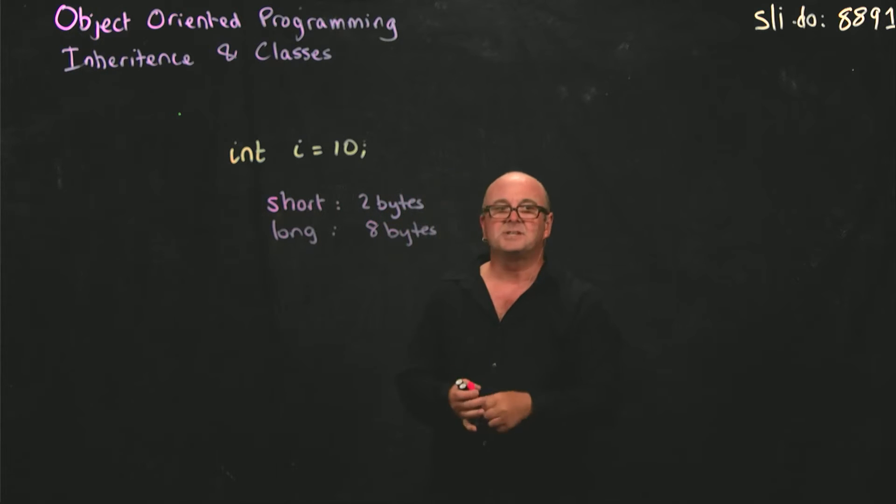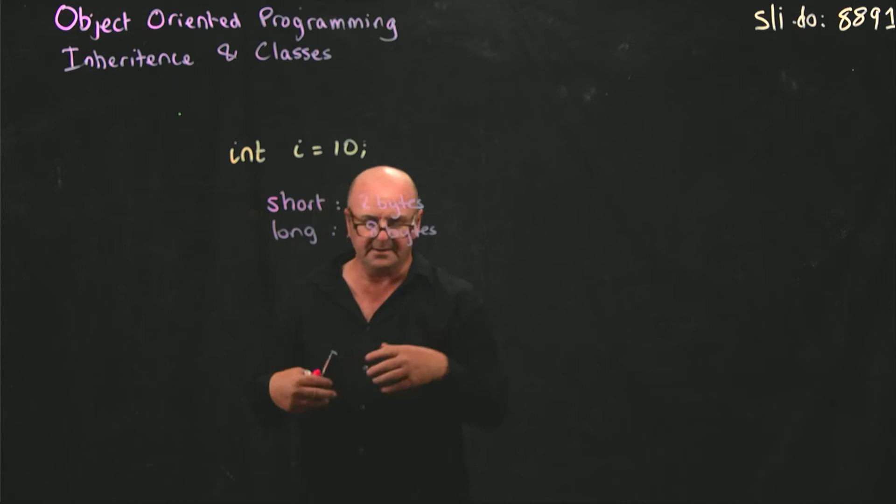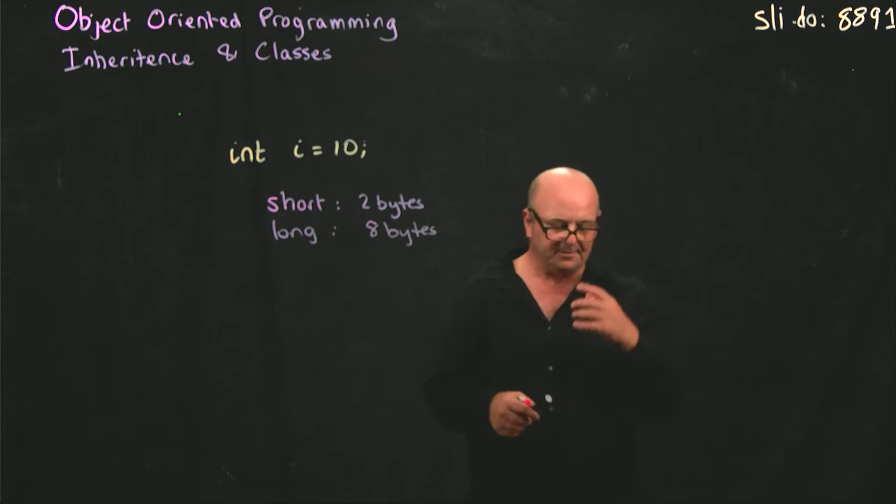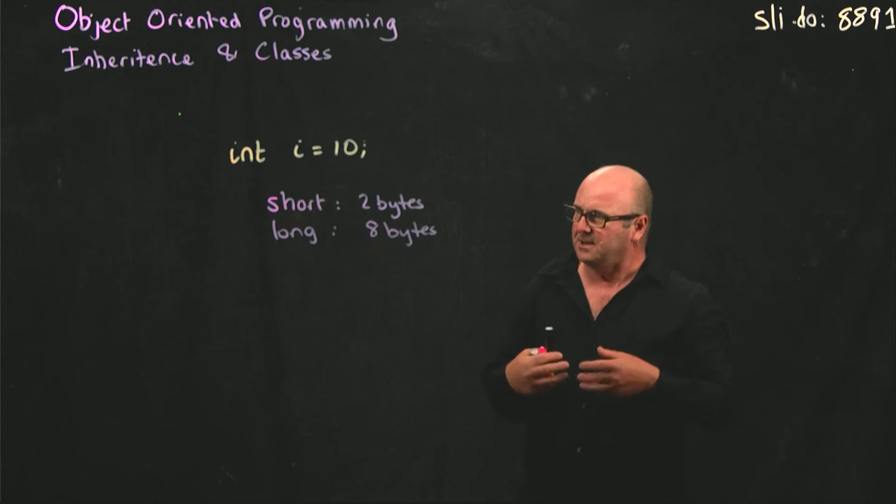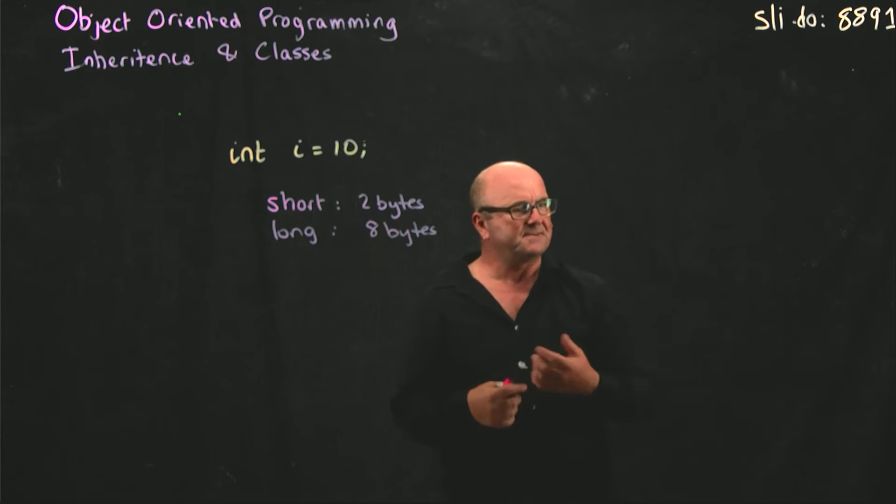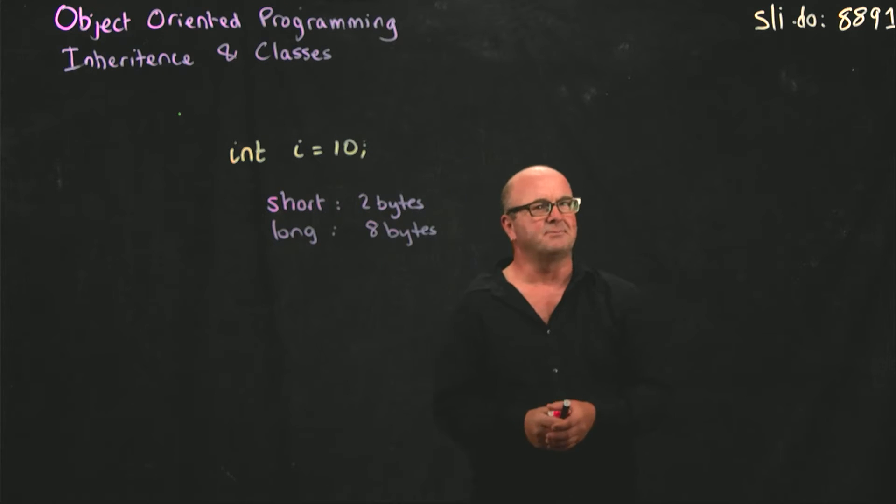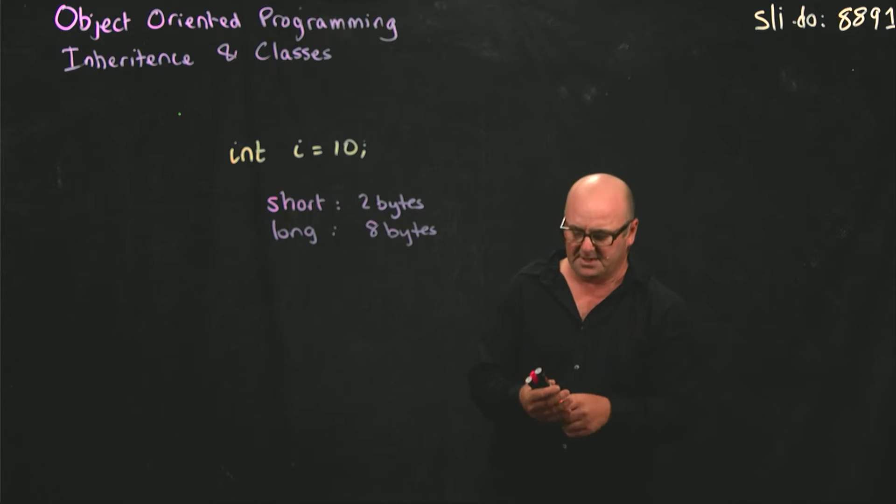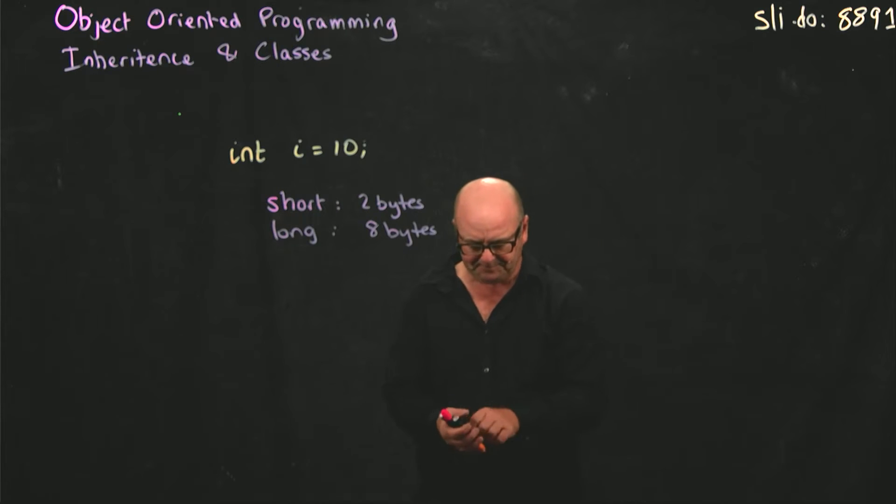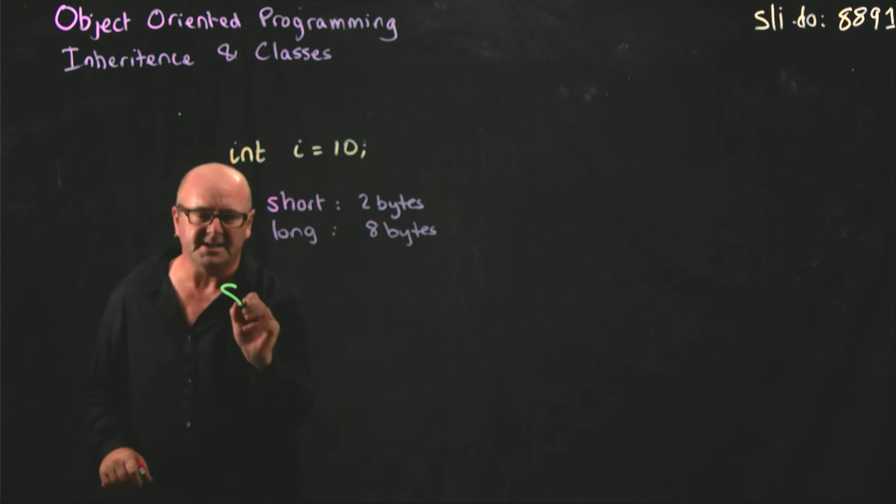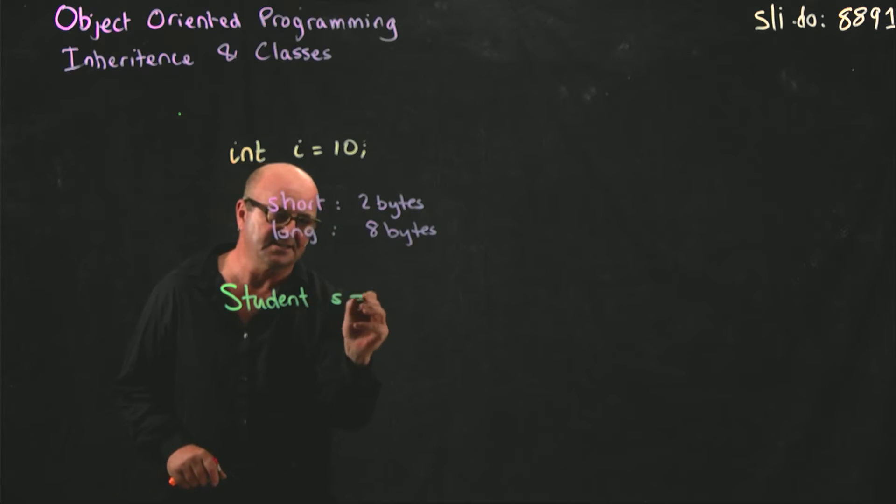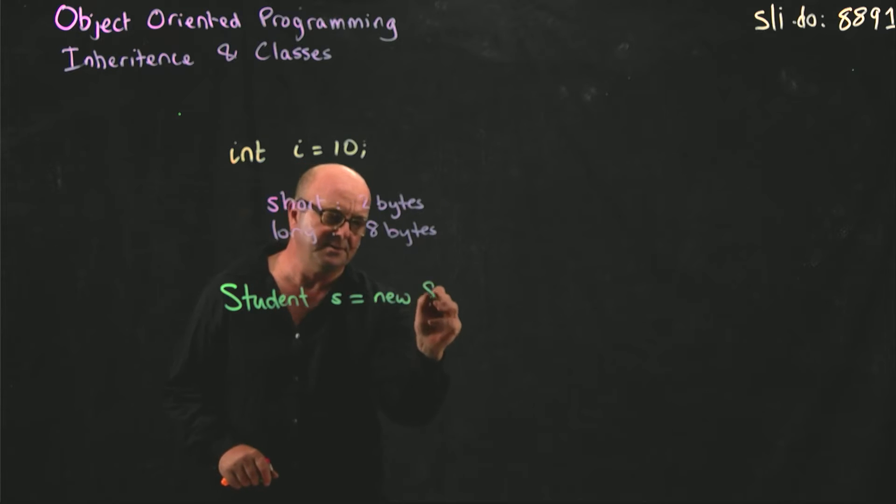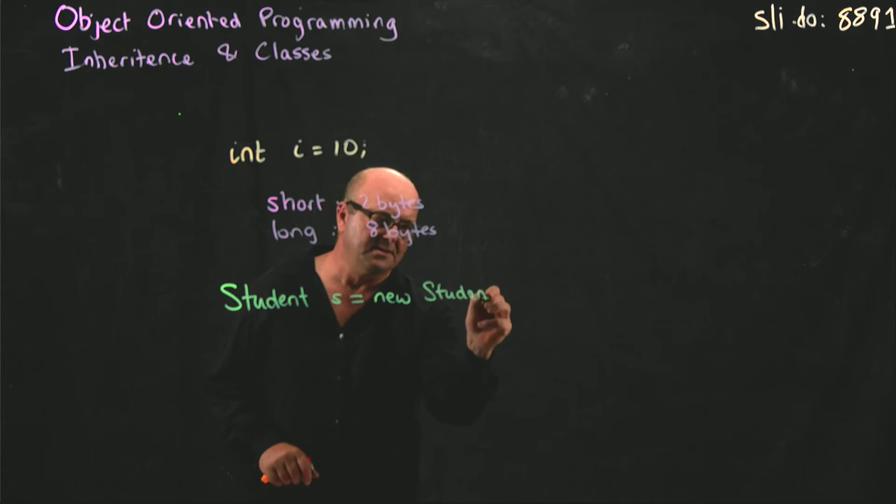If I instantiate an object, and I'm going to use an example throughout the class of basically people, students, undergraduates, faculty, kind of as if we were writing a program to describe people at the university. But let's say I instantiate an object: student s equals new student. How much memory does s take?